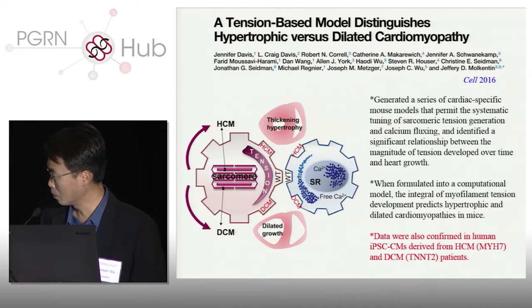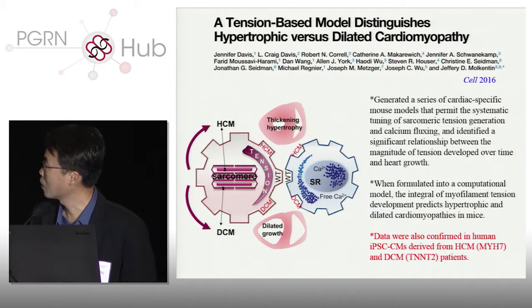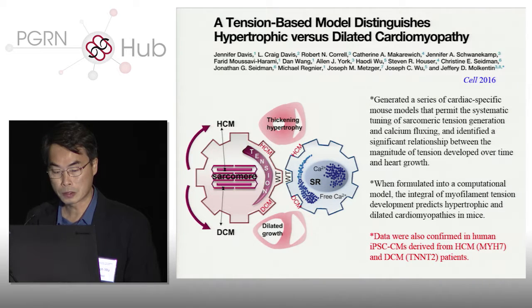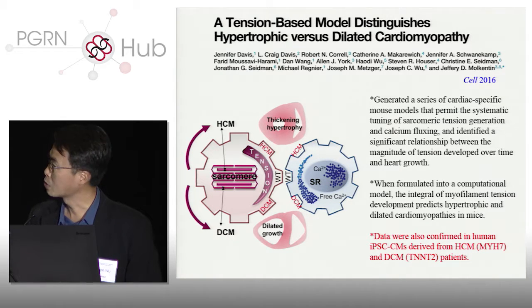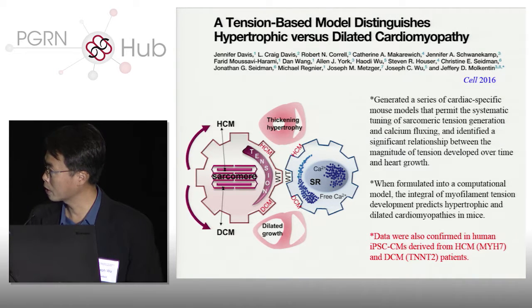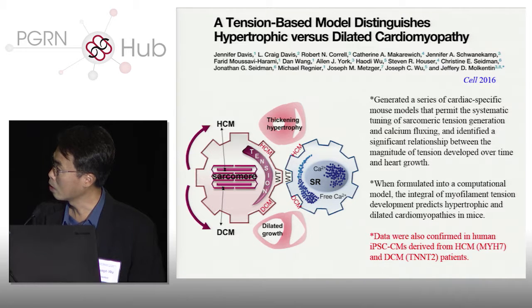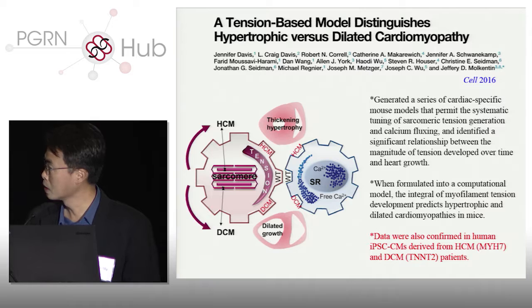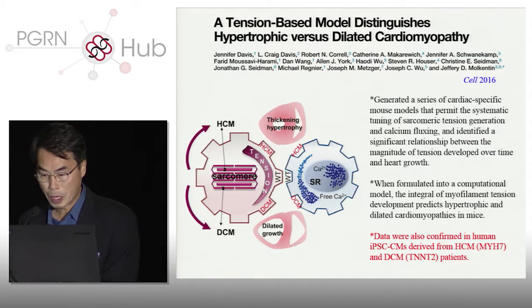More recently, with Jeff Morkington's group and others, Jeff's group generated a whole series of transgenic mouse models altering the amount of sarcomeric stress as well as the amount of calcium released from the sarcoplasmic reticulum, which accounts for cardiac thickening as well as dilatation. All these data were confirmed by using iPSC cardiomyocytes generated from hypertrophic cardiomyopathy patients and also from dilated cardiomyopathy patients.